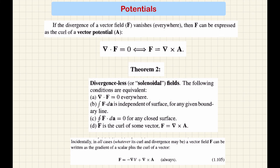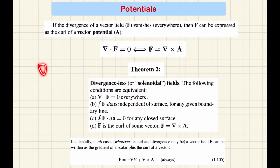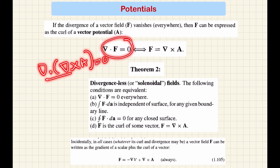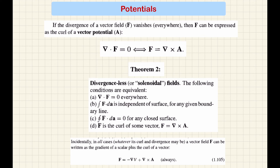Next, we discuss divergenceless fields — that is, del·F = 0. For such a field, F can be written as the curl of another vector: F = ∇×A, where A is called the vector potential. Substituting gives the divergence of curl of A, and since divergence of curl is always zero, this equation is consistent. This field is also called a solenoidal field, and the surface integral ∫F·da is independent of the surface chosen.